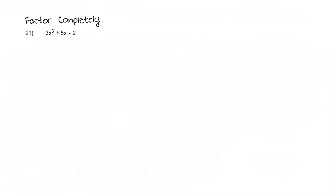Hey guys, so here we're going to factor completely number 21, which is 3x squared plus 5x minus 2. I'm going to show you guys how to approach this problem three ways. Feel free to jump to any method and watch that portion of the video.